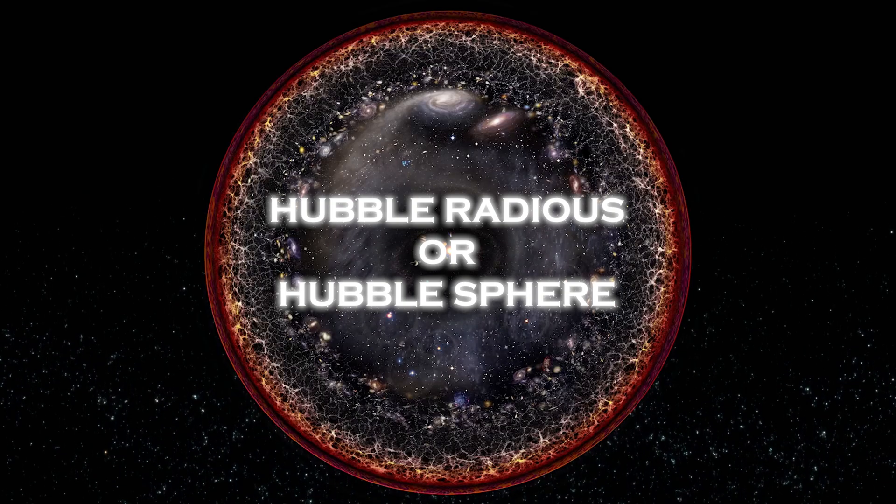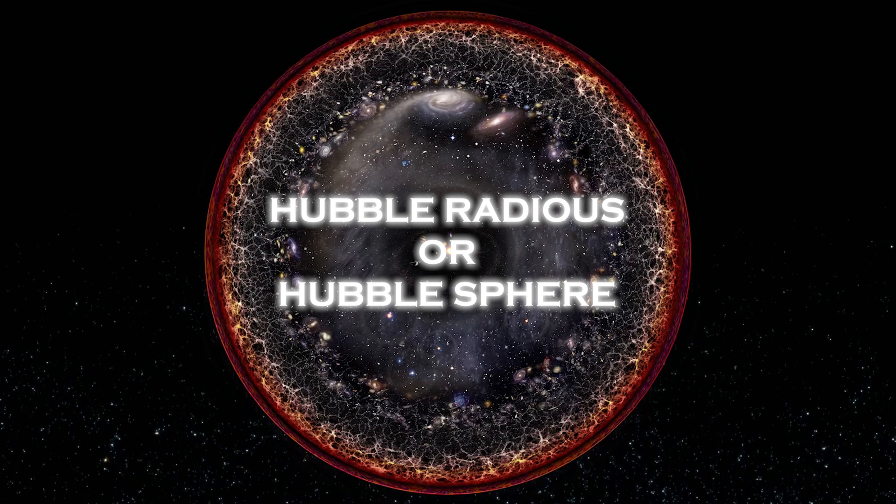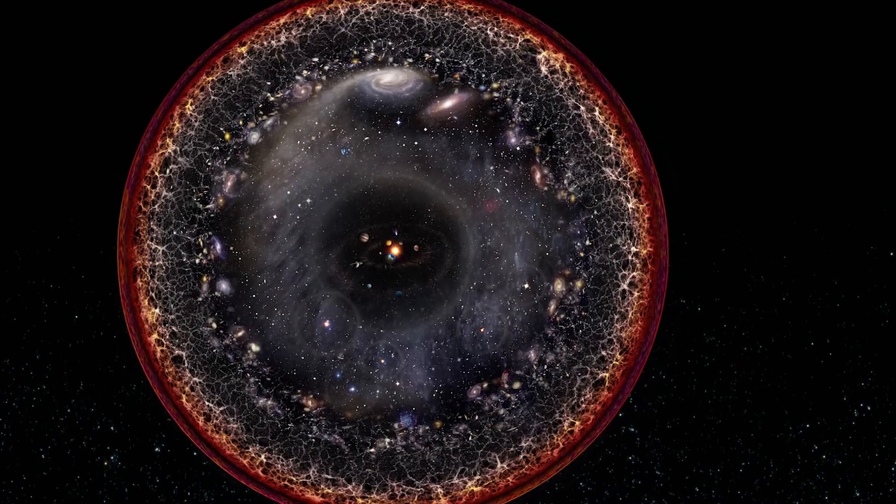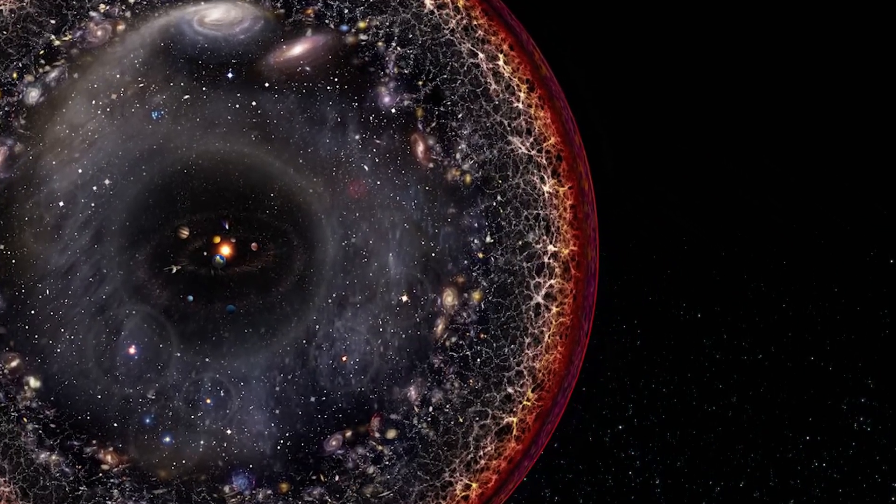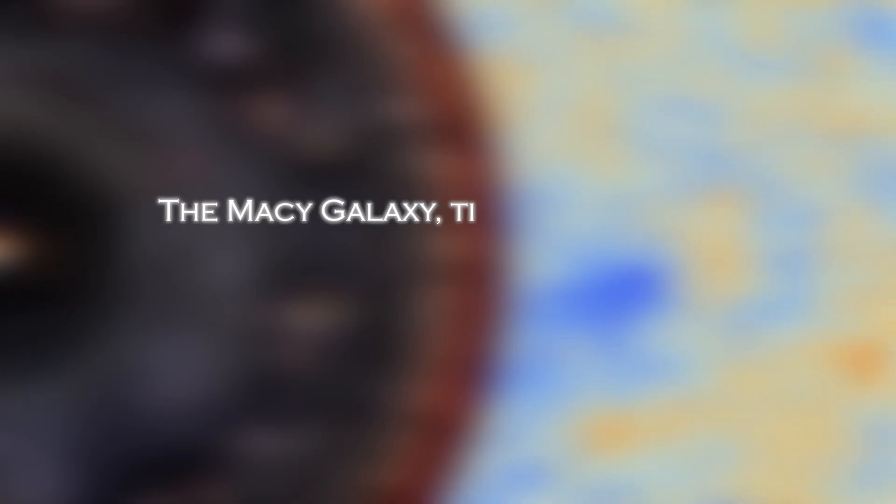The radius of the universe we can observe, known as the Hubble radius or Hubble sphere, defines the limit of what we are able to see from Earth. The most remote galaxy discovered so far, the JADES galaxy identified by the Webb telescope, lies within this region.